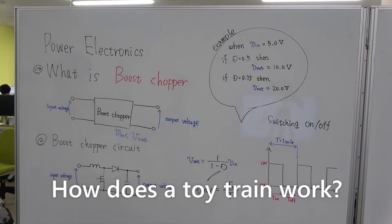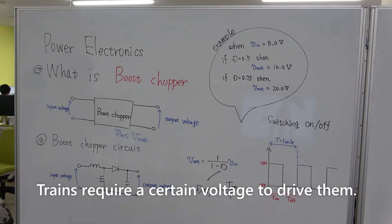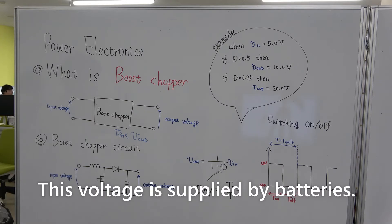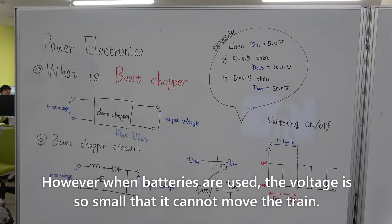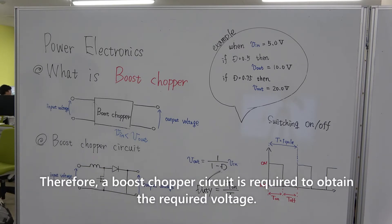How does a toy train work? Trains require a certain voltage to drive them. This voltage is supplied by batteries. However, when batteries are used, the voltage is so small that it cannot move the train. Therefore, a boost chopper circuit is required to obtain the required voltage.